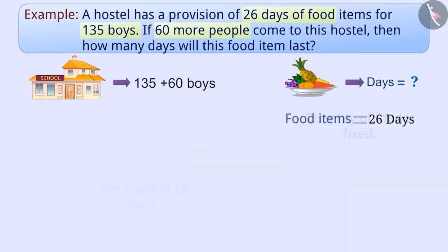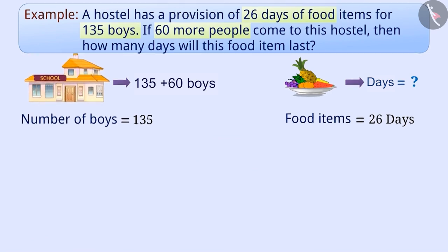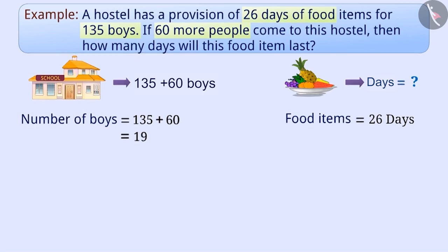The hostel has 26 days of food items for 135 boys. When 60 boys come to the hostel, the number of boys will be 135 plus 60, which is equal to 195. Let us assume that in the hostel there will be a provision of x days of food for 195 boys.